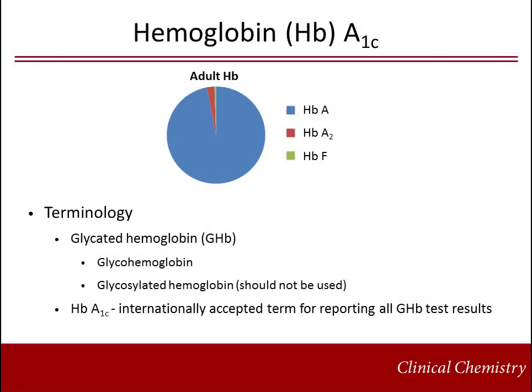Approximately 95% of adult hemoglobin is comprised of hemoglobin A in hematologically normal individuals, while hemoglobin A2 and very low levels of fetal hemoglobin make up the remainder. Hemoglobin A1C makes up approximately 80% of hemoglobin A1. While there are various terms for glycated hemoglobin, hemoglobin A1C is the internationally accepted term for reporting all glycated hemoglobin test results.